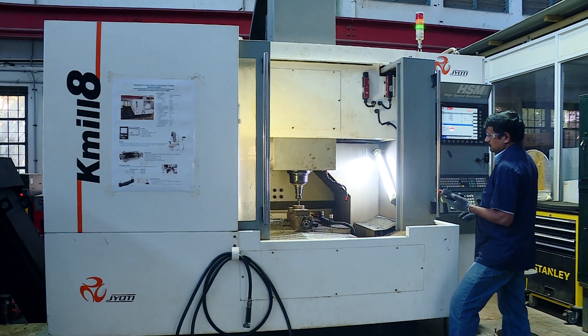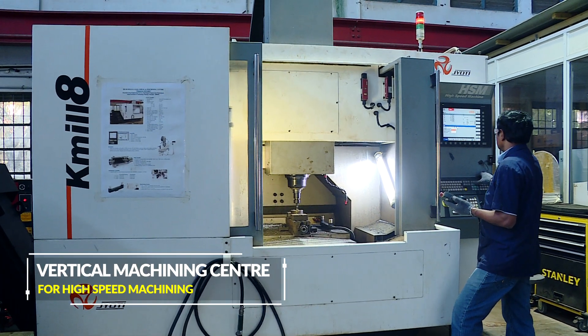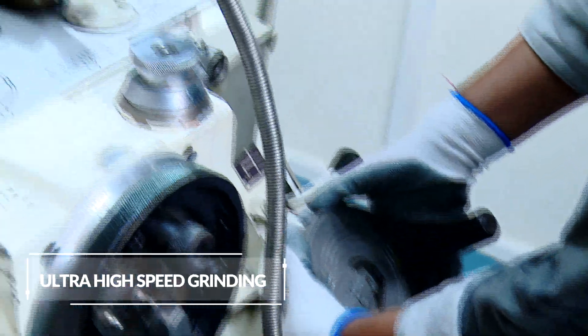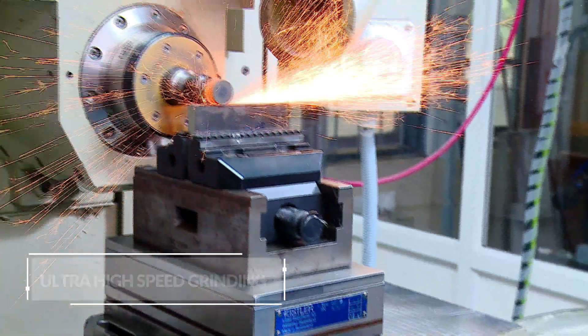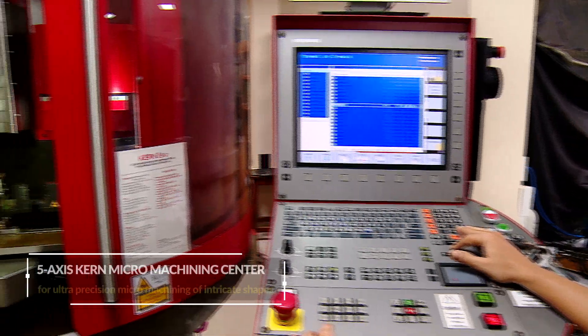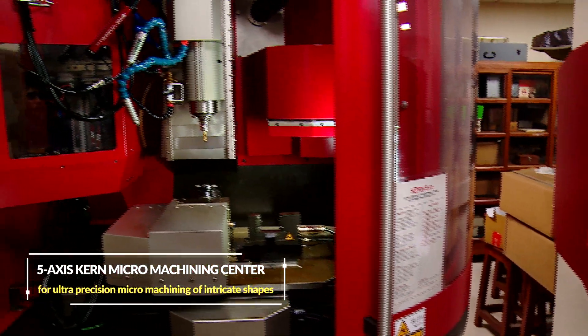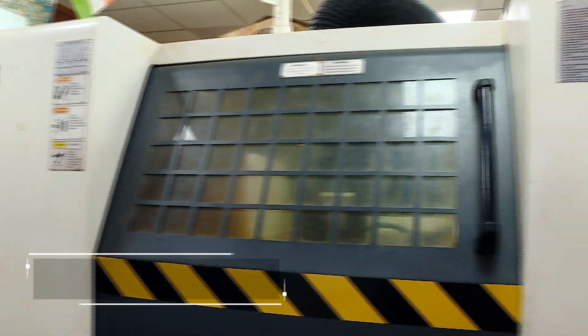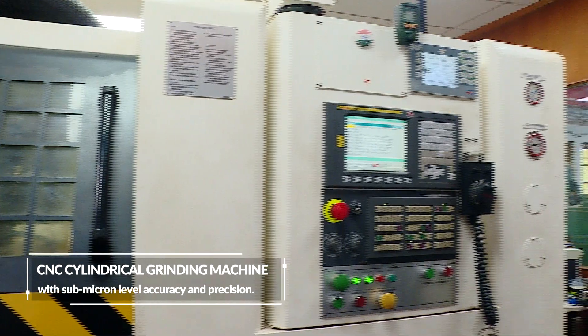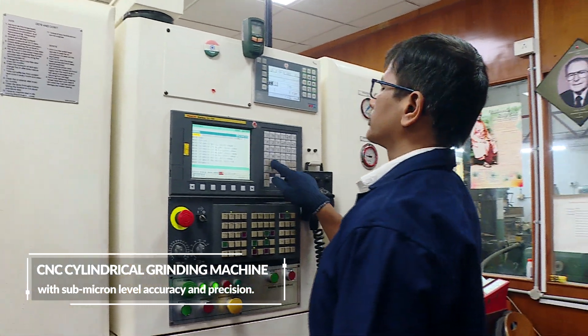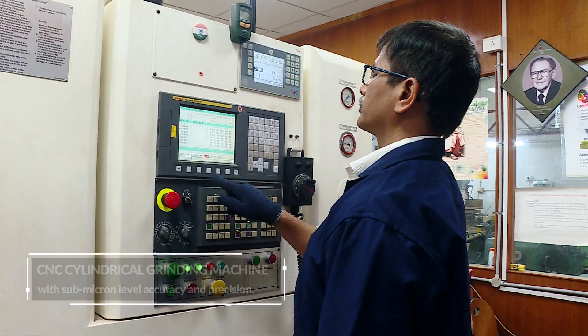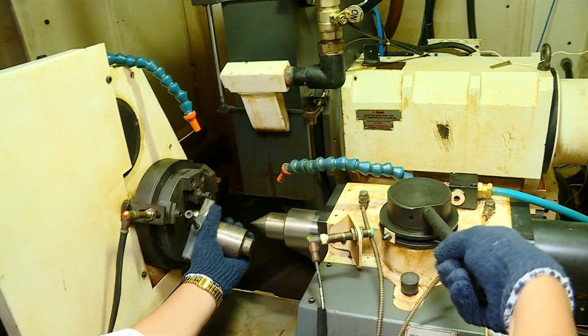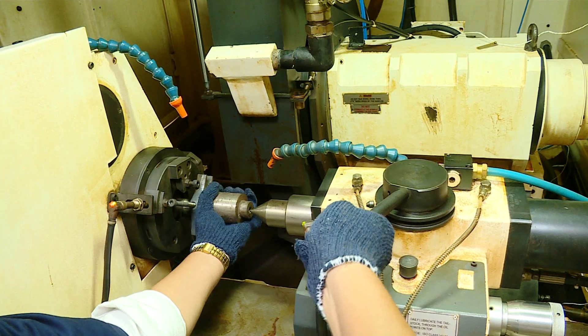A few facilities being utilized are Vertical Machining Centre for High Speed Machining, Ultra High Speed Grinding for the performance evaluation of different types of grinding wheels, 5-axis Kern Micro Machining Centre for Ultra Precision Micro Machining of Intricate Shapes, and Next Generation CNC Cylindrical Grinding Machine with capability of producing components for capital goods sectors like automobile and aerospace with sub-micron level accuracy and precision.